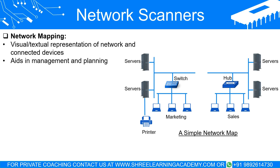In the event of a network issue, having an up-to-date network map can significantly speed up the troubleshooting process. Moreover, network mapping complements rogue system detection by ensuring all network systems are authorized and accounted for. Going back to the example of an employee connecting their personal laptop — not only can the network scanner identify this as a rogue system, but network mapping can also show exactly where on the network this device is connected, making it easier to locate and address the issue.